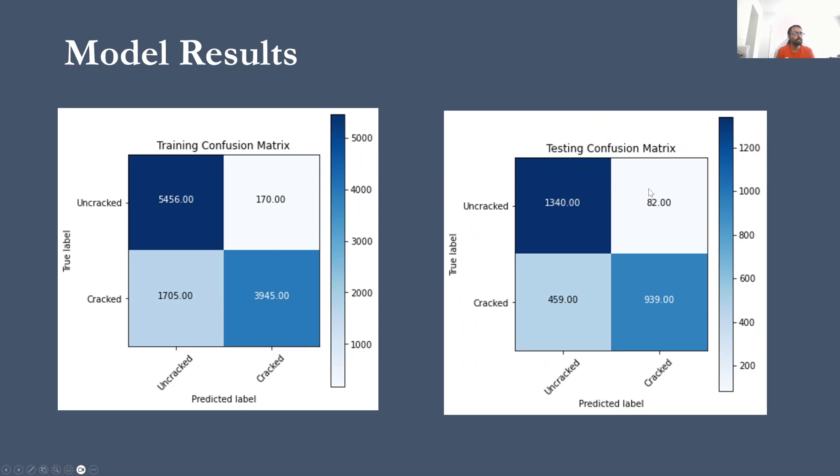And now this is basically the confusion matrix for the training dataset and the testing dataset. And of course, the diagonal values are higher with correct predictions. And it looks like the model is doing a lot of its error in the form of it is predicting cracked images as uncracked in higher rate than predicting uncracked as cracked, as you can see in both training and testing datasets.